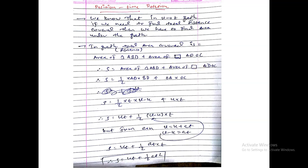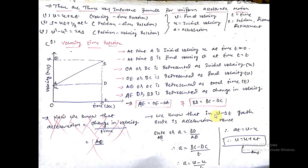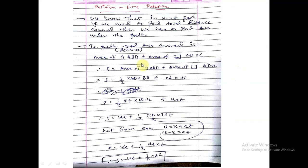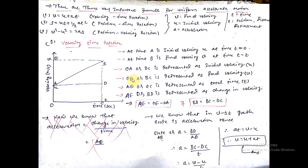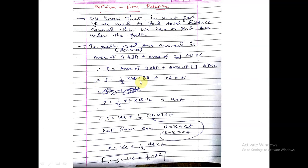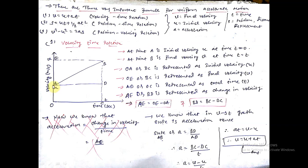Now if we look at slope, we have acceleration, but area is total distance. So total distance is area of triangle plus area of rectangle. Area of triangle is 1/2 base into altitude. So take 1/2 base into altitude, AD into BD, plus area of rectangle is length into breadth. So OA into OC, length into breadth. So s = 1/2 AD into BD plus OA into OC.